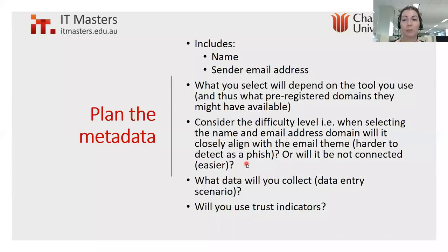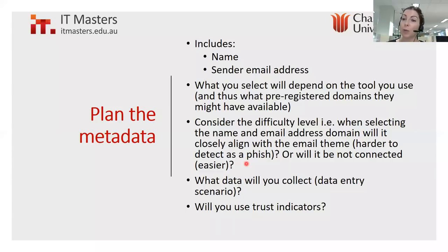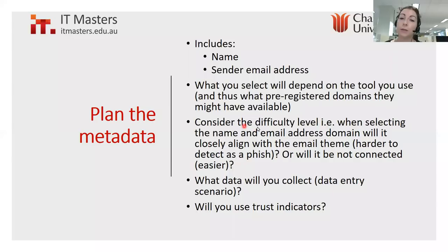Also consider the difficulty level when selecting the name and email address of the domain — will it closely align with the email theme so it's harder to detect as a phish, or will it be unrelated? Consider what data you're going to collect. The three different types of scenarios are: links, where you embed a link that takes them to an education web page; data entry, where they enter credentials and are then shown an education page; and attachment, where they open a Word or PDF document containing education information.